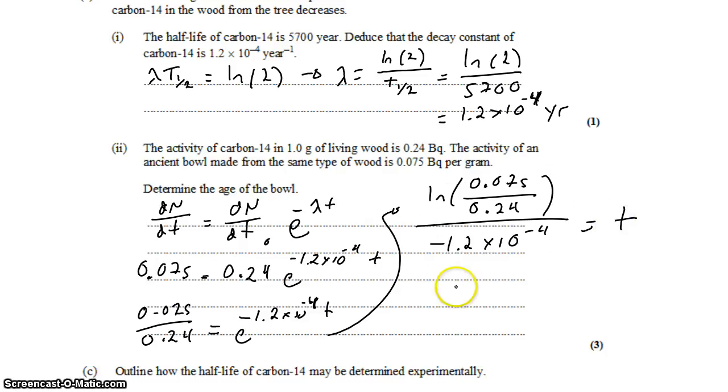All of this can go in the calculator. And we get that the time is 9.5 times 10 to the 3.